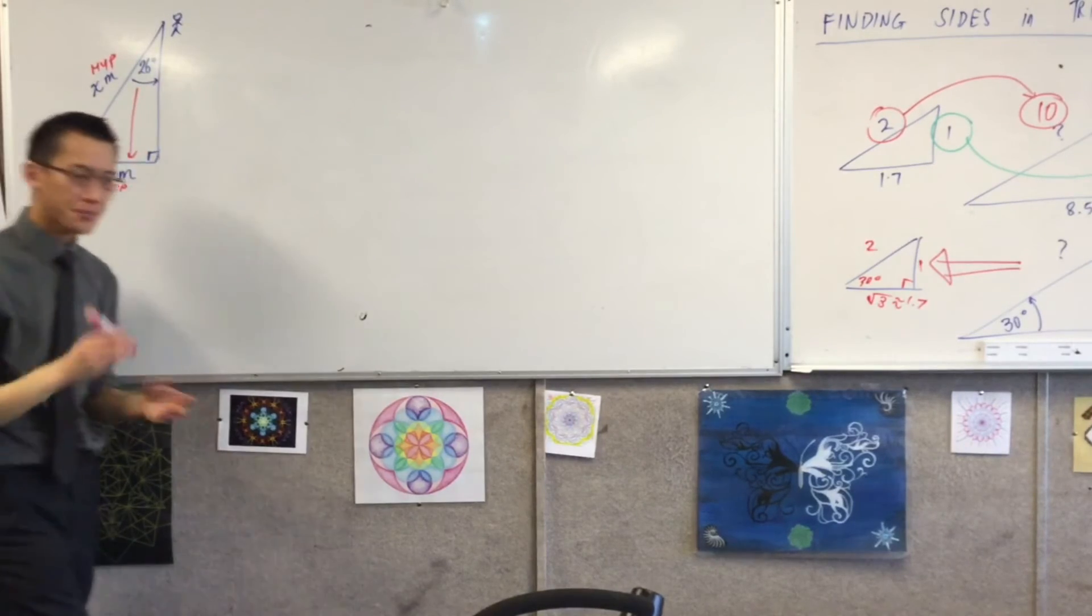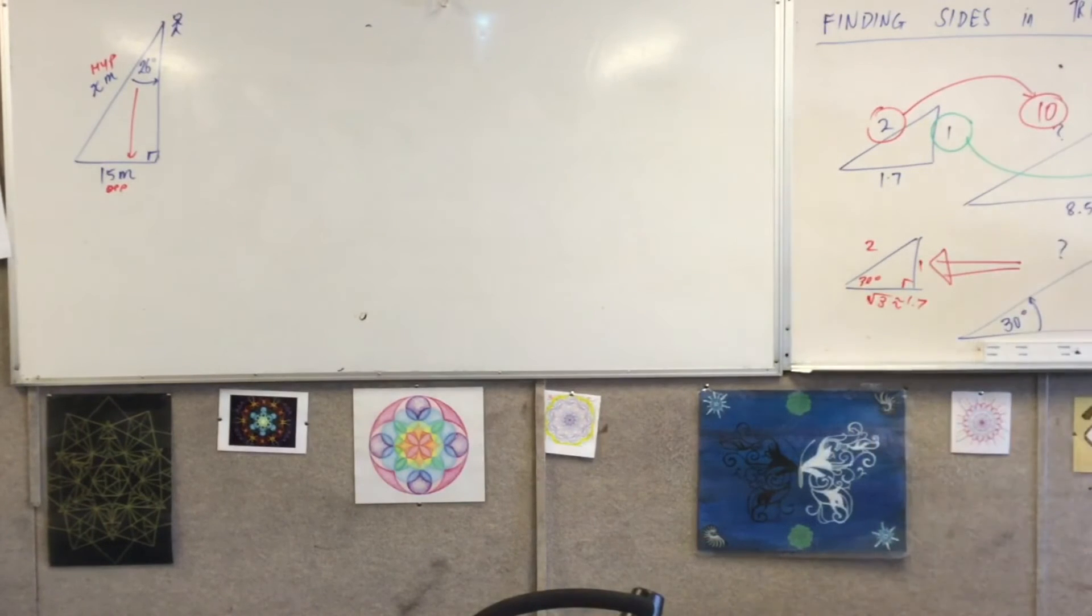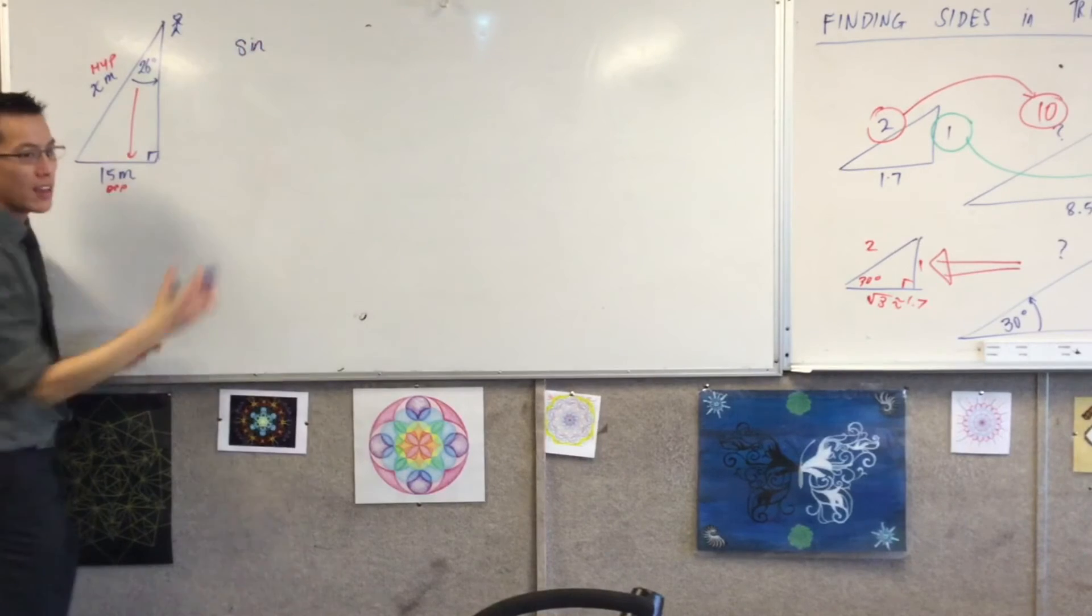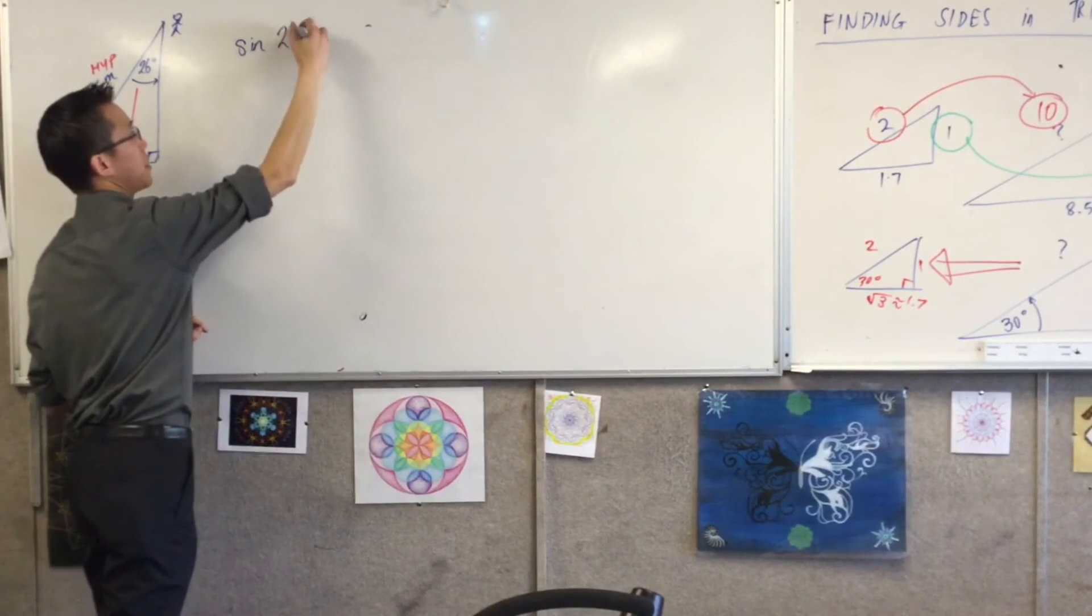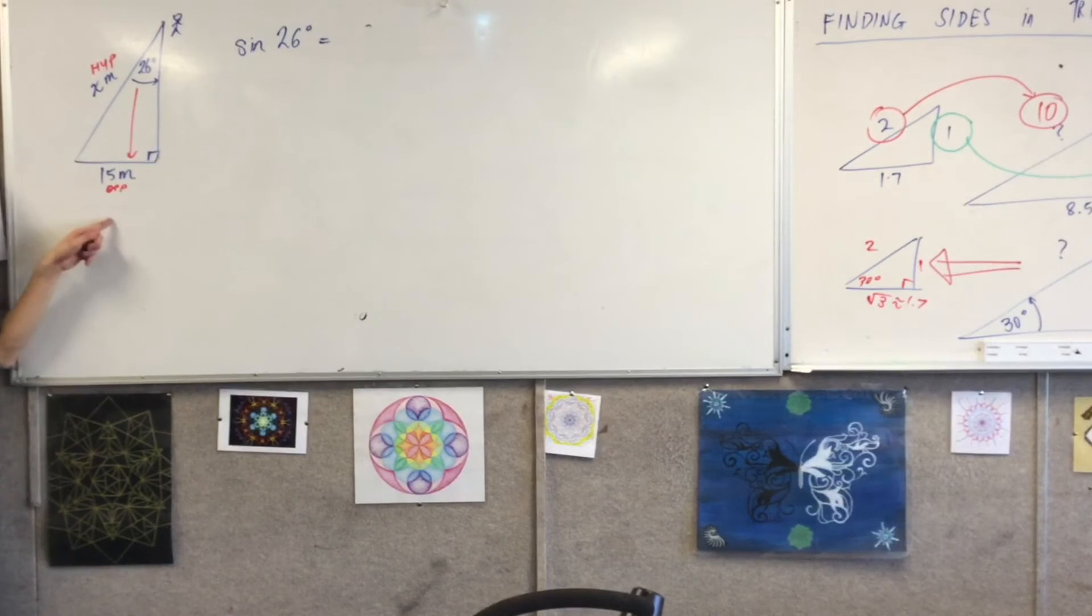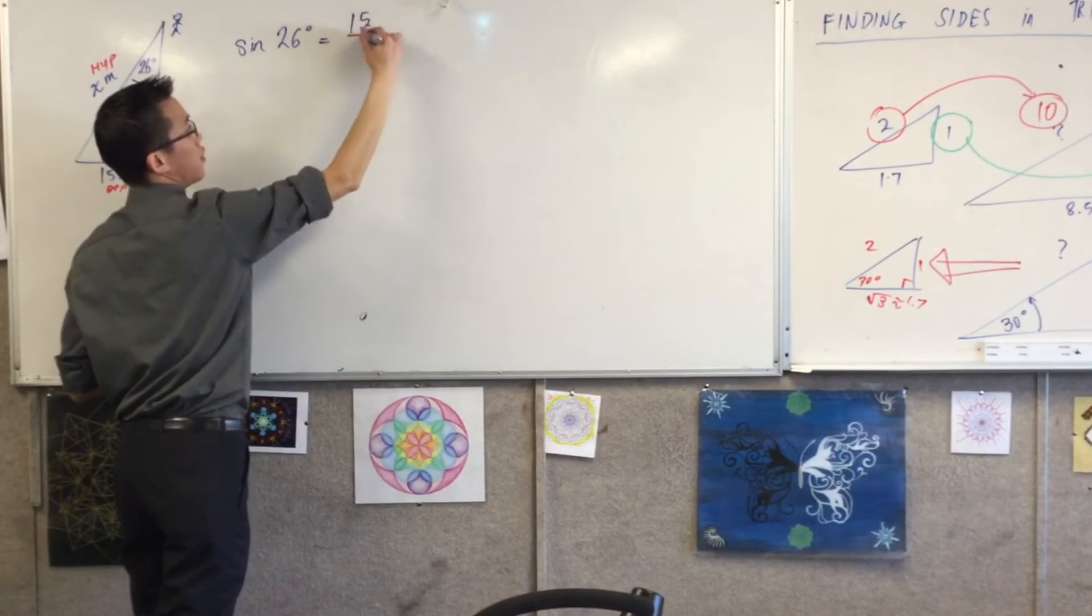So having identified opposite and hypotenuse to the pairing I got, I know with SOHCAHTOA which of the trig ratios would be useful to me. Which one? It'll be sine again, right? So I'm going to say sine of this angle that I'm interested in, okay, 26 degrees, it's opposite, opposite, on hypotenuse, 15 over x, okay?